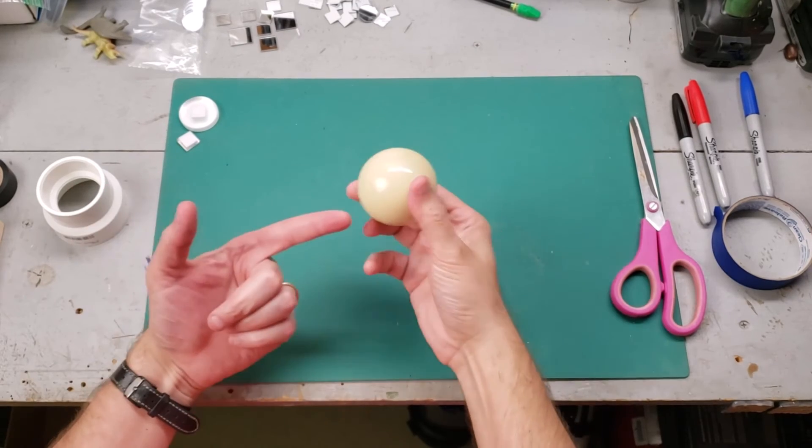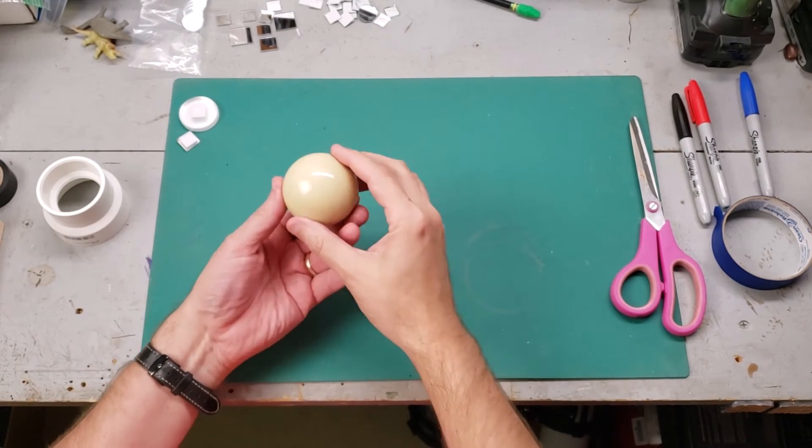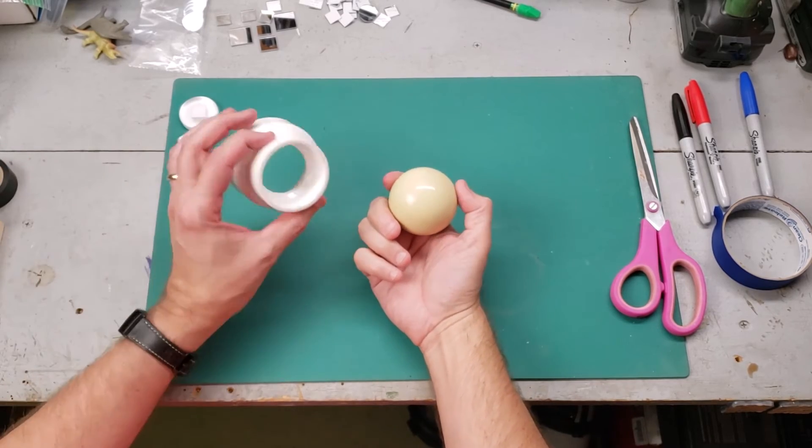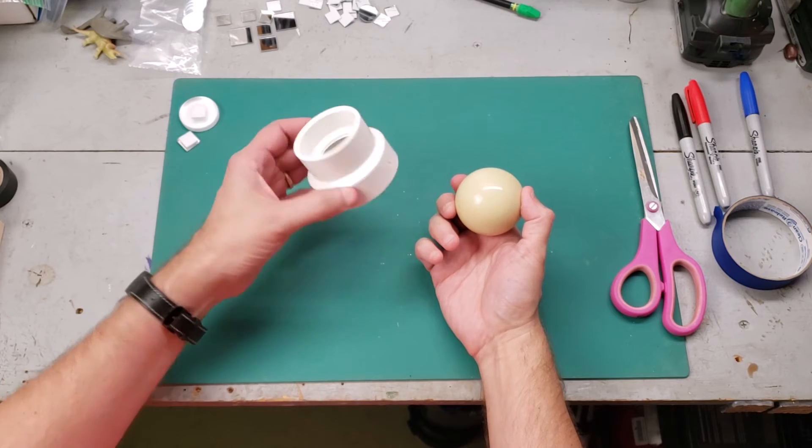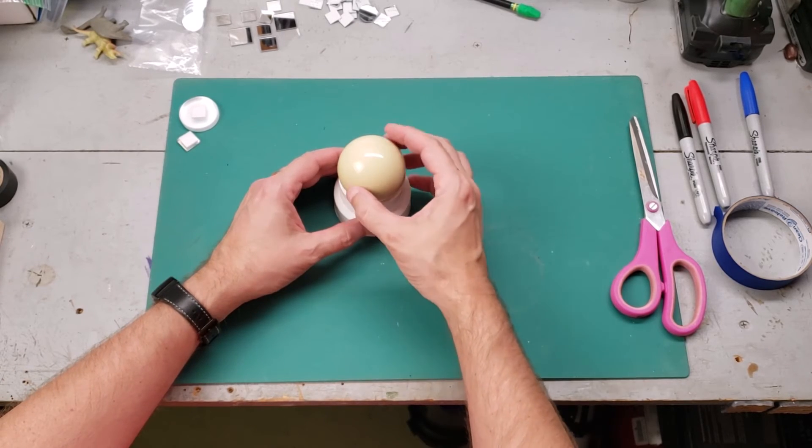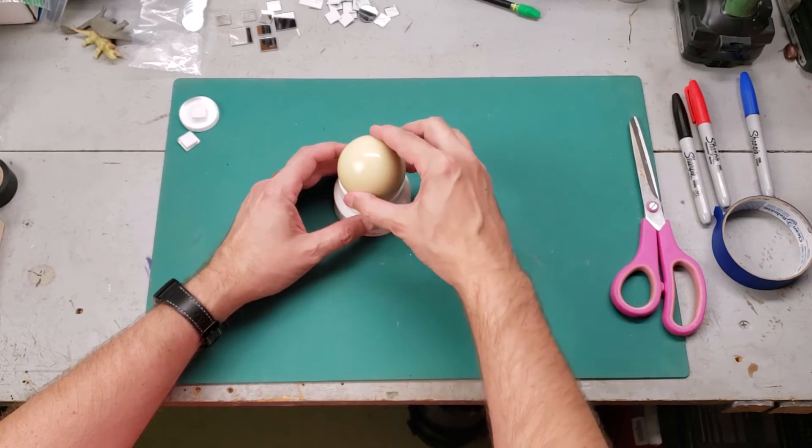However, the best tool to use is a billiard ball, or a cue ball in this case, from a pool table. You basically set this into a PVC collar. I got this from Lowe's. I think it was three dollars or something like that. And this just sits in there. It gives you a rock solid base, and you can move this to any angle.